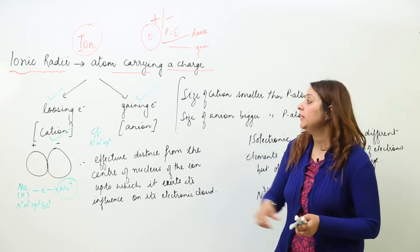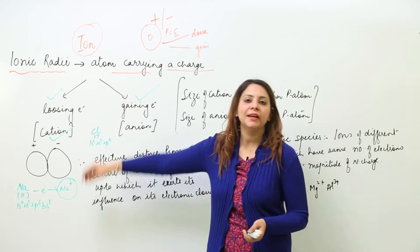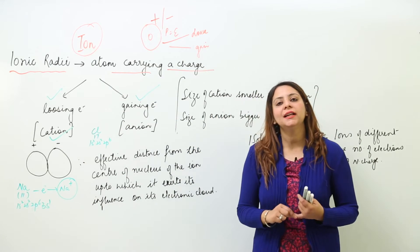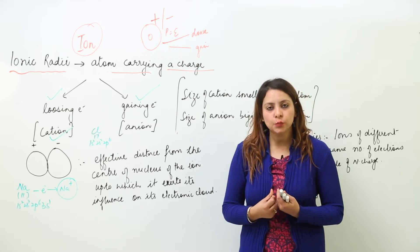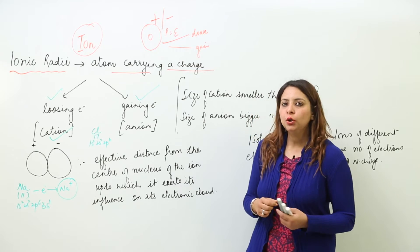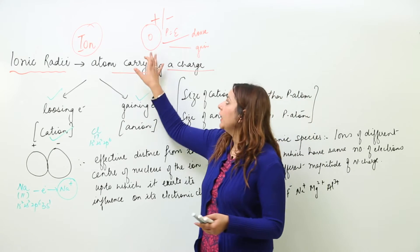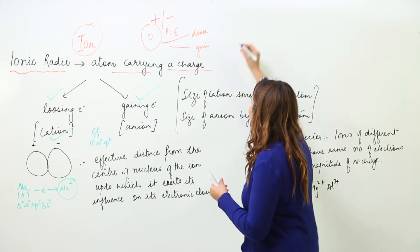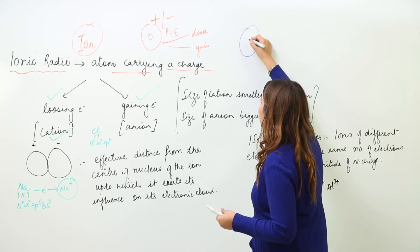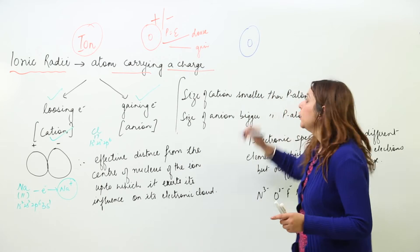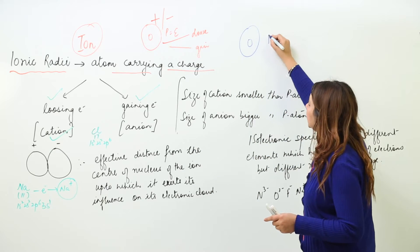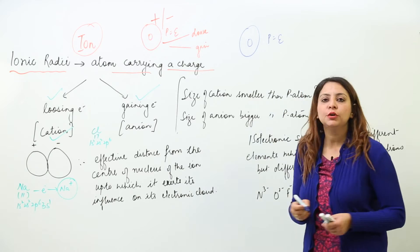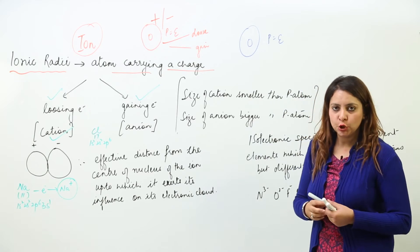Now we have ionic radii. The first thing you should know is what is an ion? As you all know, an atom is neutral. If we talk about any atom, it is neutral because the number of protons is always equal to the number of electrons.